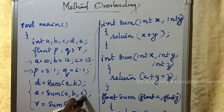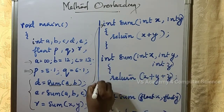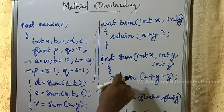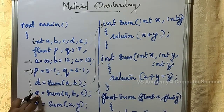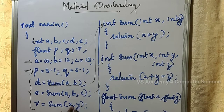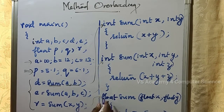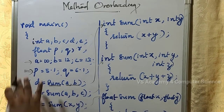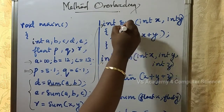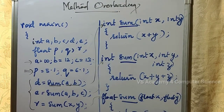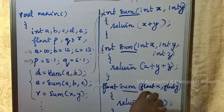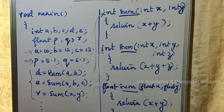Next, sum of a, b, c takes three arguments — a, b, c — and returns their result. We also have a version that takes float arguments, float a and float b. So with the same function name 'sum', we have different sets of arguments — different number or different data types. This is how we implement method overloading.